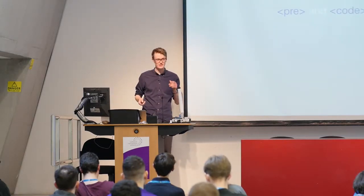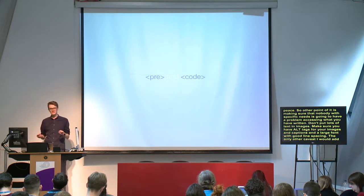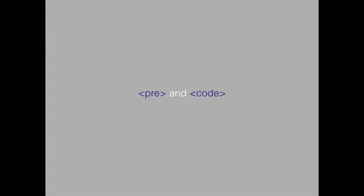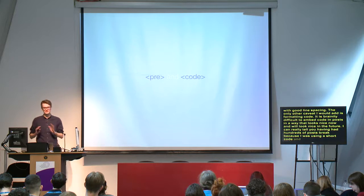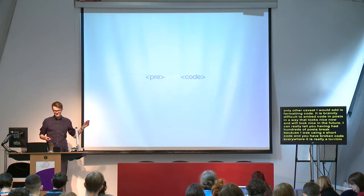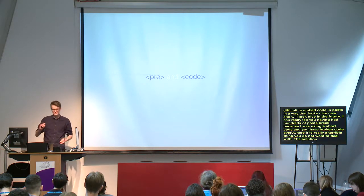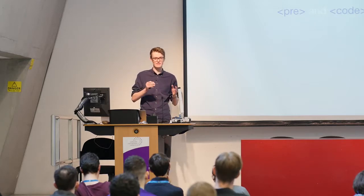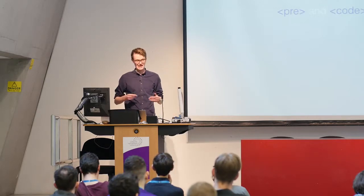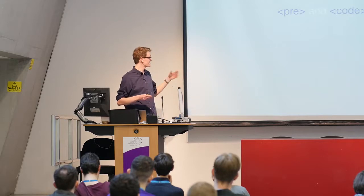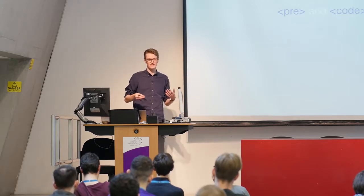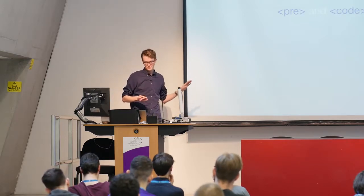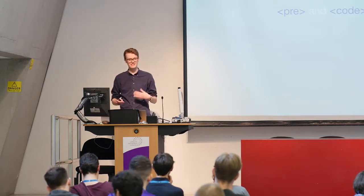The other part of accessibility is making sure nobody with specific needs has trouble accessing your content: don't put lots of text in images, make sure you've got alt tags and captions for images, and use a large font with good line spacing. One specific caveat is formatting code. It's surprisingly difficult to embed code in posts in a way that looks nice now and in the future. The solution is to use pre and code tags, and convert your code into HTML before pasting it in — so instead of angle brackets, use the HTML output for angle brackets. That way WordPress won't try to output your code in the post. Use plugins that enhance this if you want nice syntax colours, but don't use anything that replaces those pre and code tags.